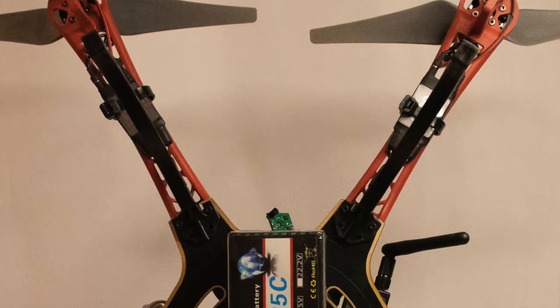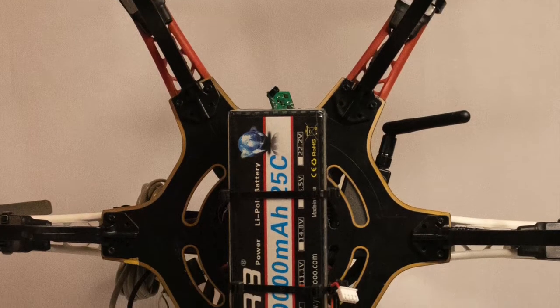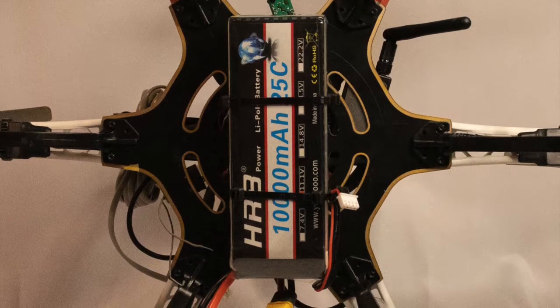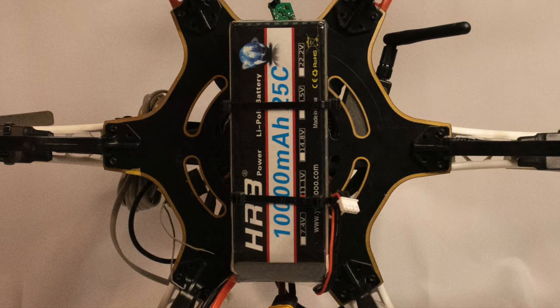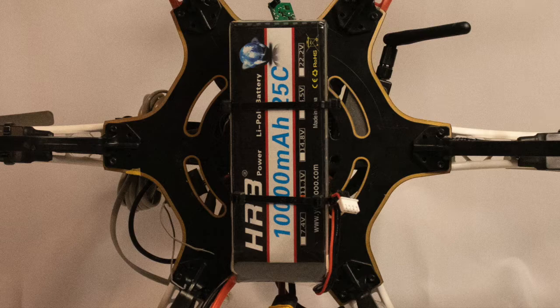The drone is powered by the same 3-cell lithium polymer battery as the weather data acquisition system. The weather system uses a relatively small amount of power, so the battery is sized for the power requirements of the motors.